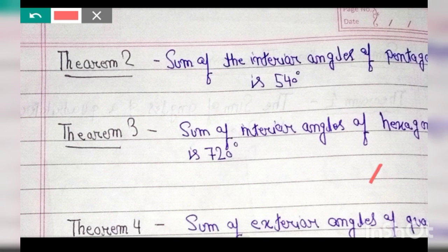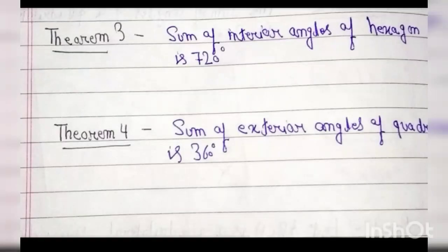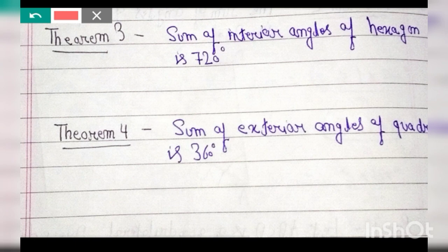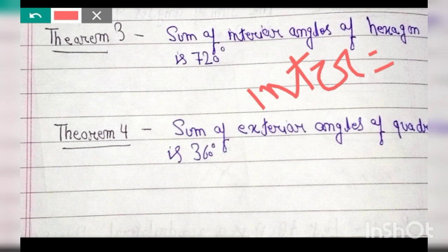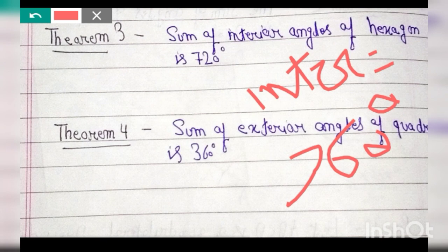The sum of interior angles of a triangle is 180 degrees, pentagon is 540 degrees, and hexagon is 720 degrees. Theorem: the sum of exterior angles of a quadrilateral is also 360 degrees. So for any quadrilateral, the sum of exterior angles is 360 degrees. The sum of interior angles of a quadrilateral is 360 degrees, and the sum of exterior angles is also 360 degrees.